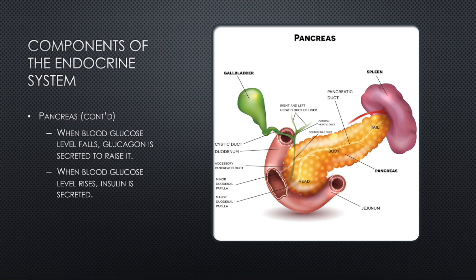Probably one of the most well-known functions of the endocrine system is the regulation of blood glucose. When blood glucose levels fall, glucagon is secreted by the alpha cells within the islets of Langerhans to raise blood glucose. It stimulates the liver, which converts stored glycogen into sugar and secretes it into the bloodstream. Glucagon is not sugar itself — it acts as a hormone signaling the liver to break down glycogen and convert it into glucose. It's an interesting and fascinating process.